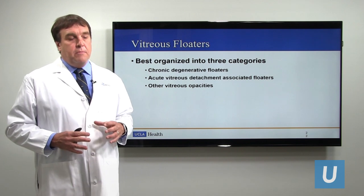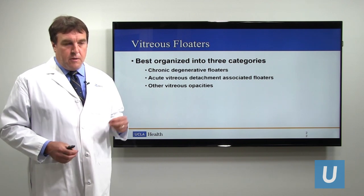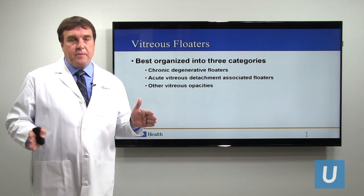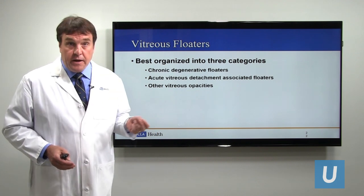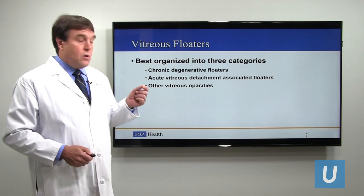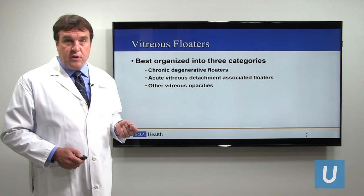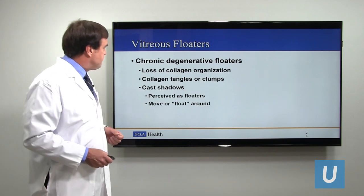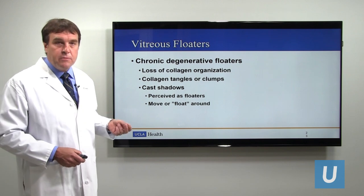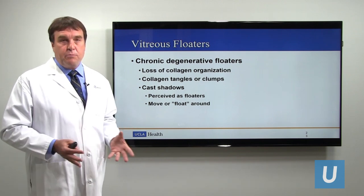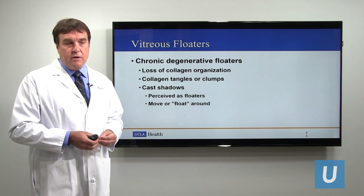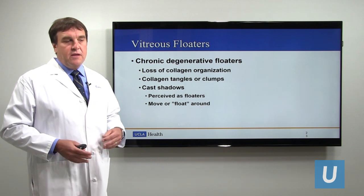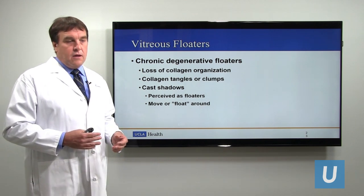Floaters occur in many ways and for different reasons. Basically, they are opacities of the vitreous, and they're generally categorized into three different groups: chronic degenerative floaters, acute vitreous detachment-associated floaters, and other vitreous opacities. Chronic degenerative floaters are what I've been describing — the collagen fibers lose their perfect organization, start clumping together, and cast shadows.